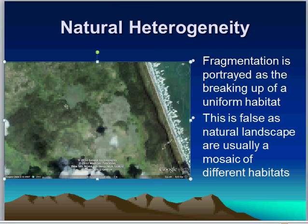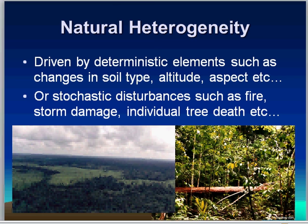Natural heterogeneity in some ways is very similar to artificial fragmentation. Natural heterogeneity is driven by two main drivers: deterministic drivers and stochastic drivers. Deterministic drivers are basically things which are always there over a long period of time — things like soil type, altitude, aspect, and rainfall. They determine the mosaic of different habitats by changes in these parameters across the landscape.